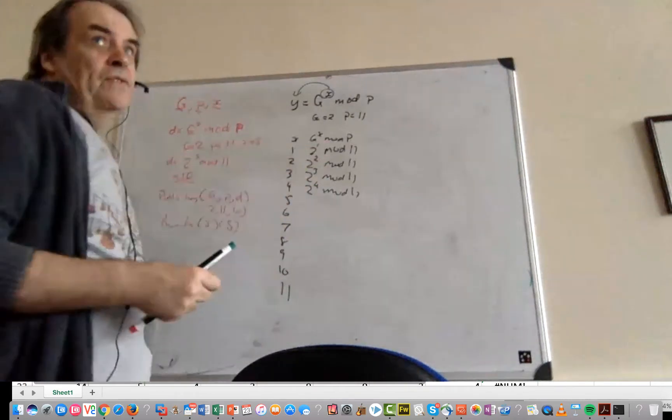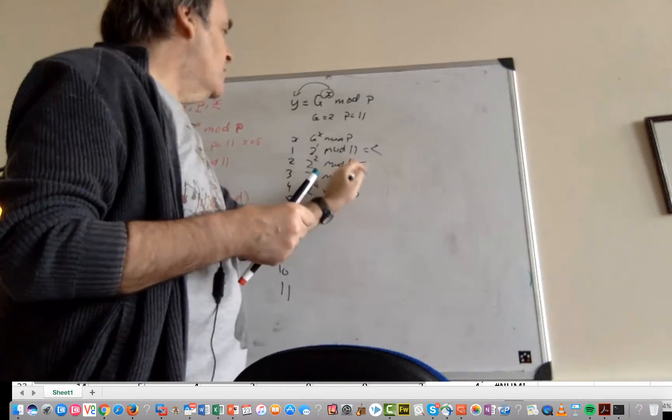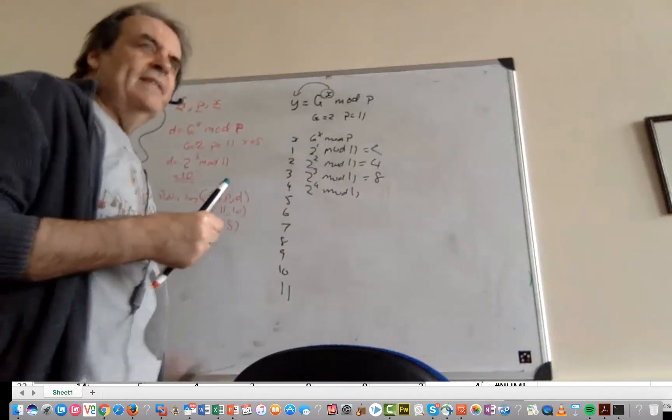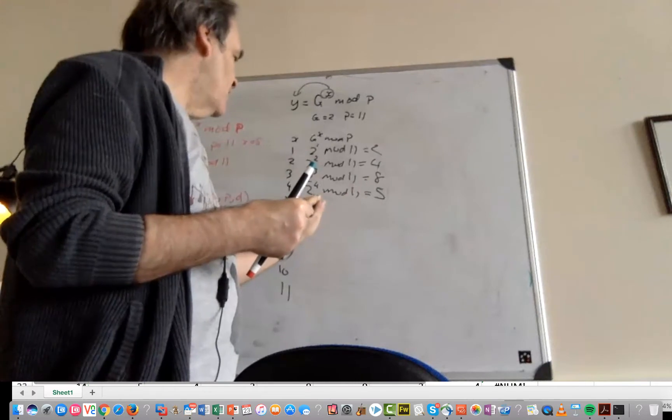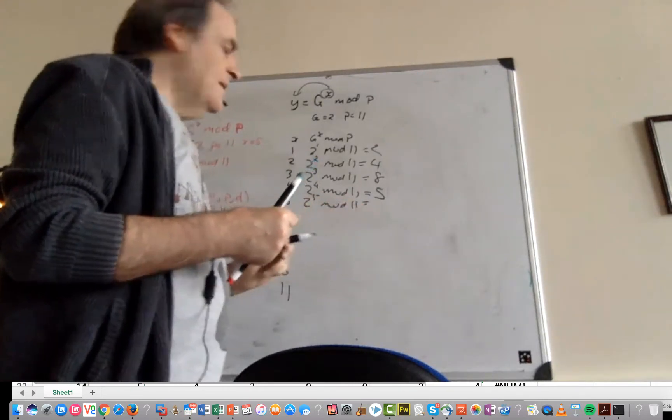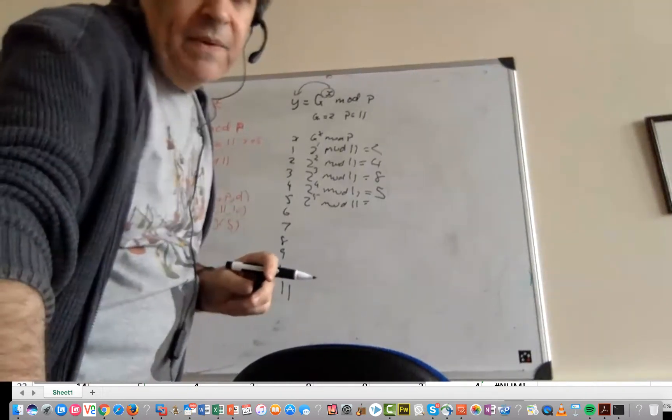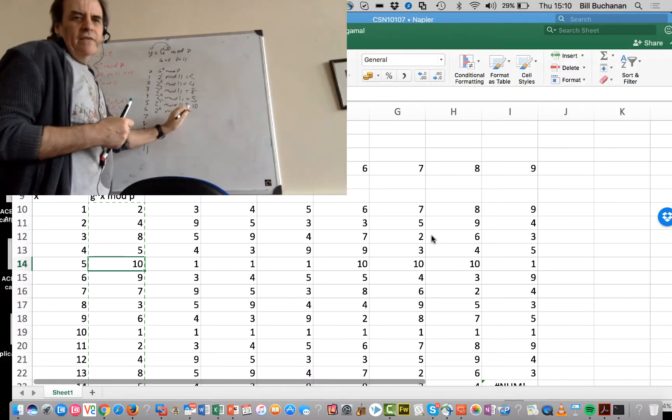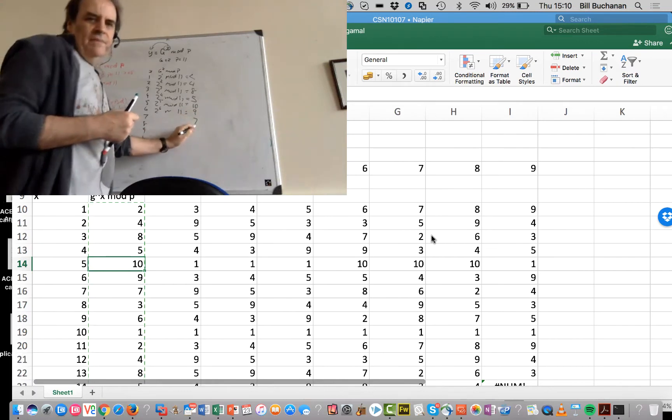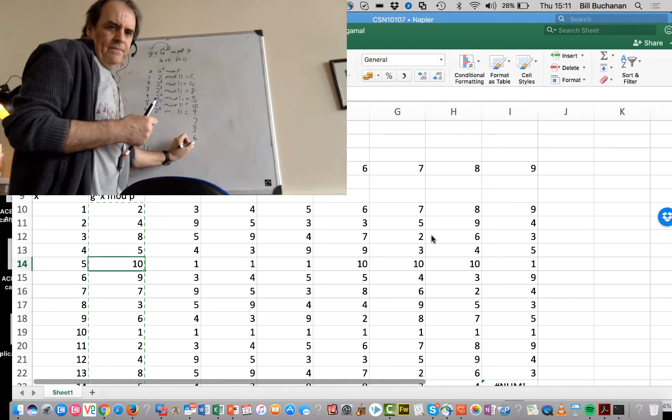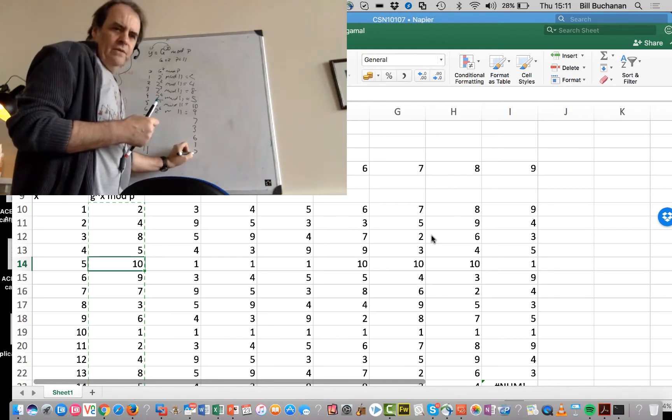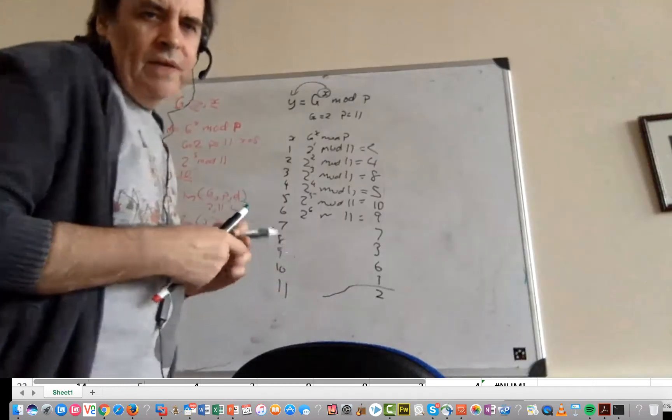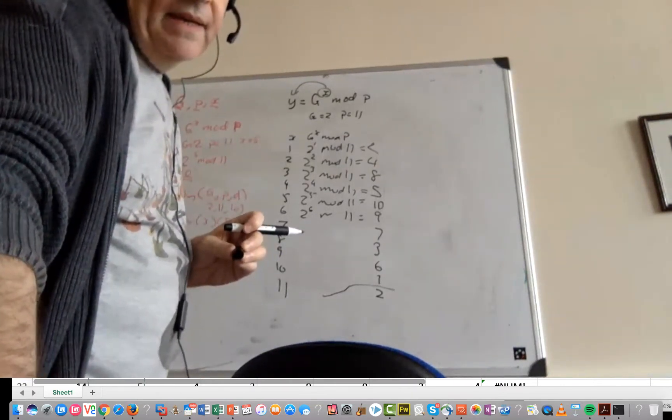2 to the power of 1 mod 11 is 2, 2 to the power of 2 is 4, 2 to the power of 3 is 8, 2 to the power of 4 is 16 mod 11 which is 5. 2 to the power of 5 mod 11 is 10. 2 to the 6 gives us 9, then 7 gives 3, 8 gives 6, 9 gives 1, 10 gives 2, and when we get to 11 we come back to 2 again.